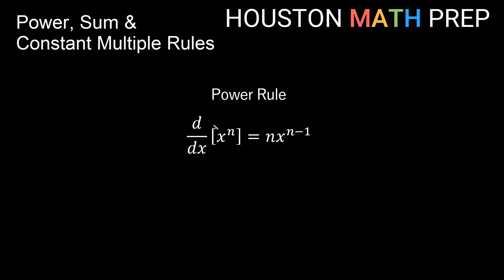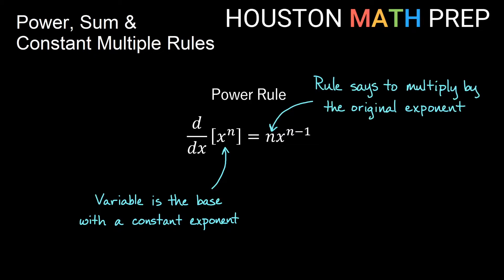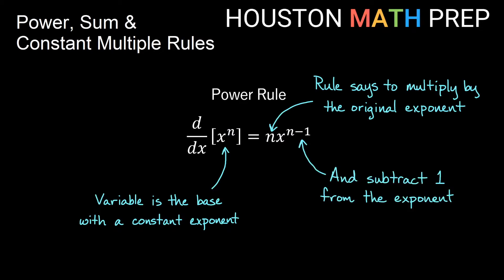First up is our power rule. If we have the derivative with respect to x of x to some constant n, then the power rule tells us that is n times x to the n minus 1 power. We multiply on the outside by the original exponent we started with, and then subtract 1 from the exponent — that gives us the derivative of x to some power.